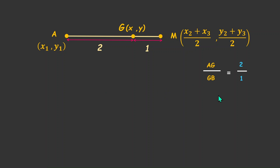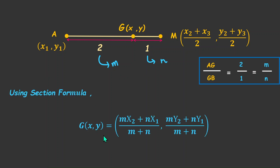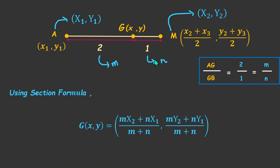So we write: AG/GB = 2:1 = m:n, where m = 2 and n = 1. Now let's write the section formula. G(x, y) = (m·X2 + n·X1) / (m + n), where X1 is the x-coordinate of A, which is x1, and X2 is the x-coordinate of M, which is (x2 + x3)/2. Similarly for the y-coordinate: (m·Y2 + n·Y1) / (m + n), where Y1 = y1 and Y2 = (y2 + y3)/2.